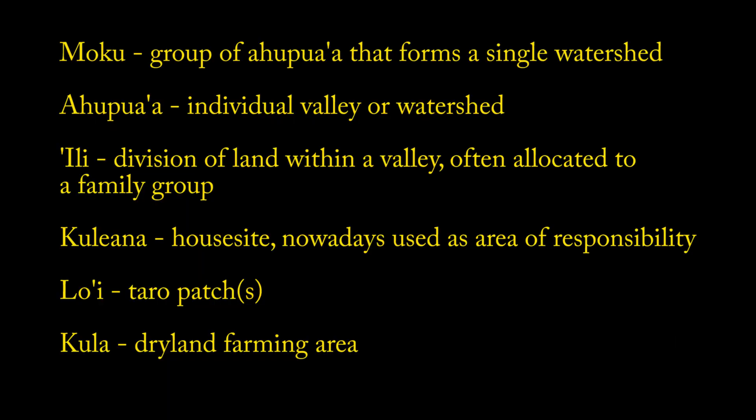Moku is a group of ahupua'a that forms a single watershed, and it's also used to refer to an entire island. An ahupua'a is an individual valley or watershed. An ili is a land division within an ahupua'a that is often allocated to a family group. A kuleana is a house site — today it's often used to mean your area of responsibility, but in old times it specifically was your house site. A lo'i is your taro patch or a group of taro patches; it can also be lo'i uala, which would be a patch of sweet potatoes. Kula would be your dry land farming area.